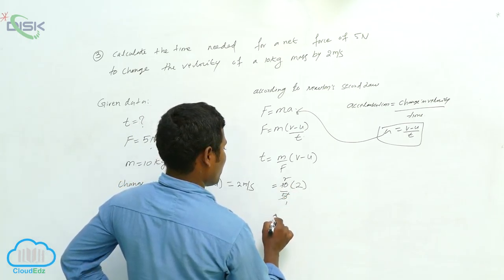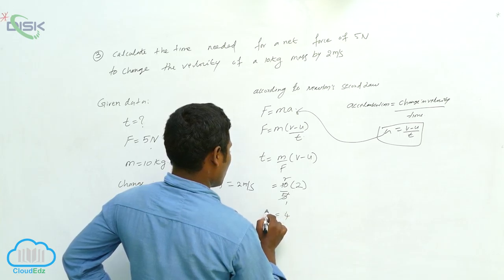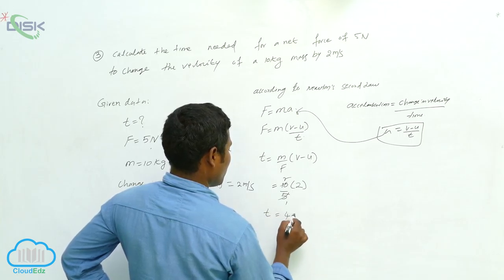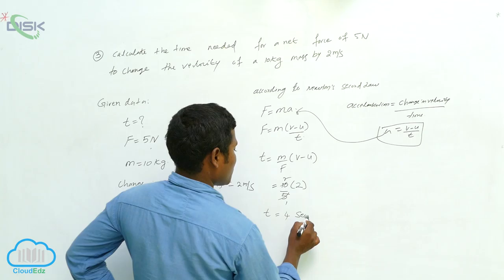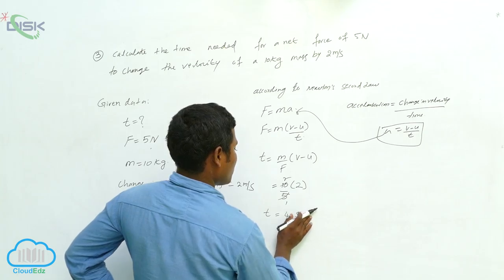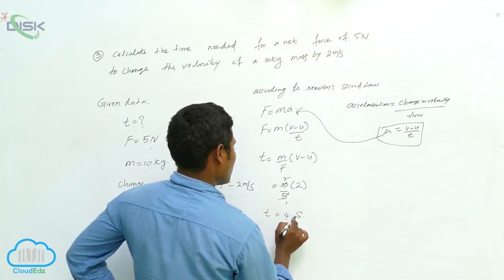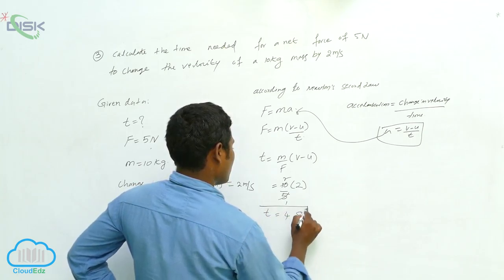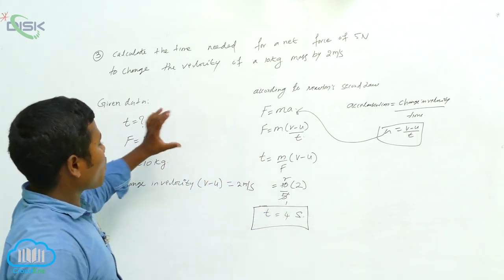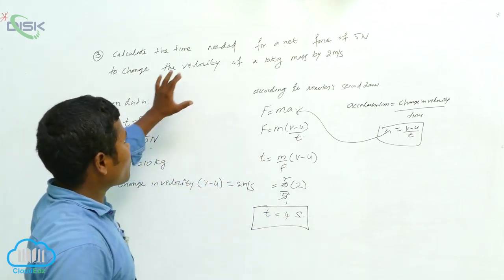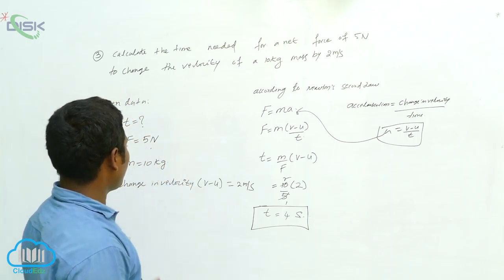So t equals 10 times 2 divided by 5, which gives 4 divided by 2, wait — that simplifies to give t equals 4 seconds. Simply we can say the answer is 4 seconds.